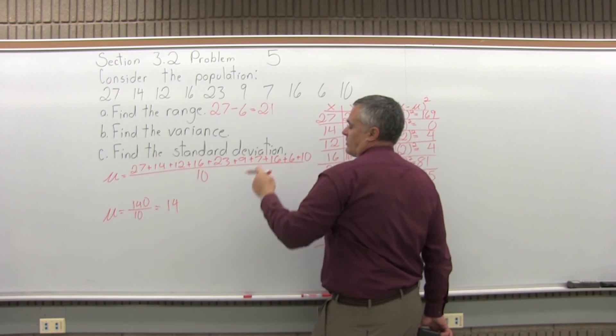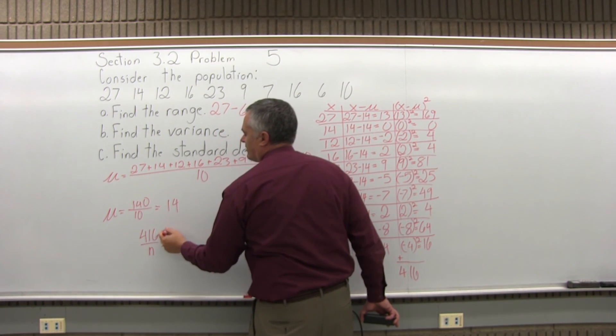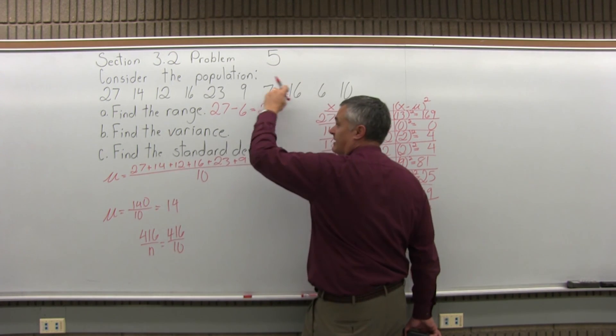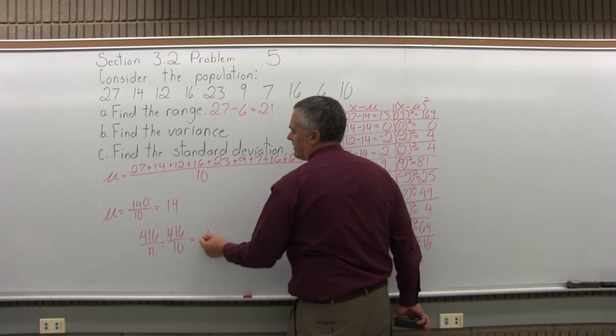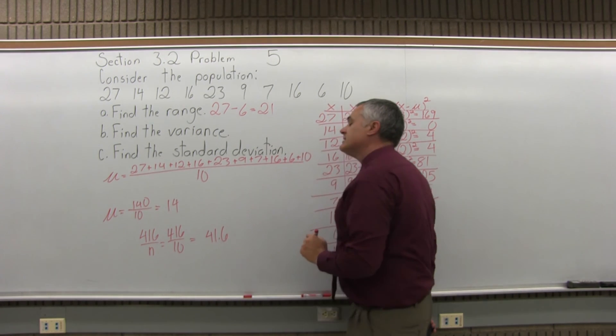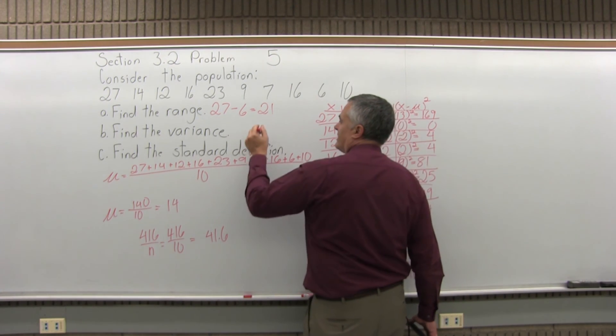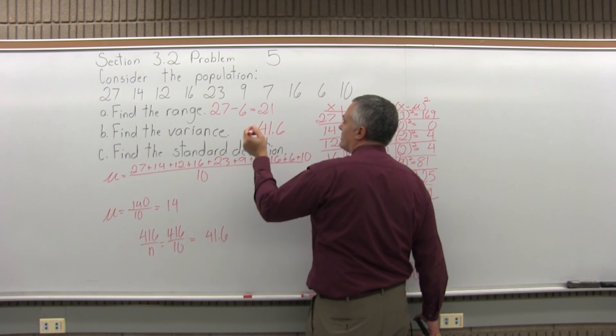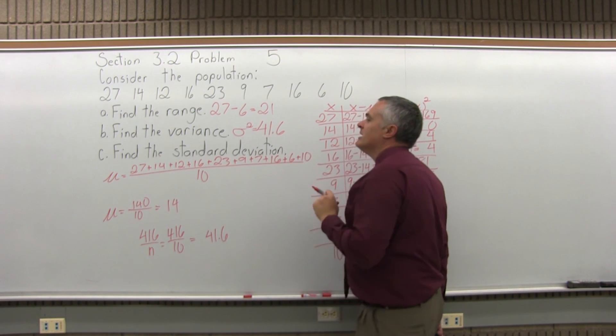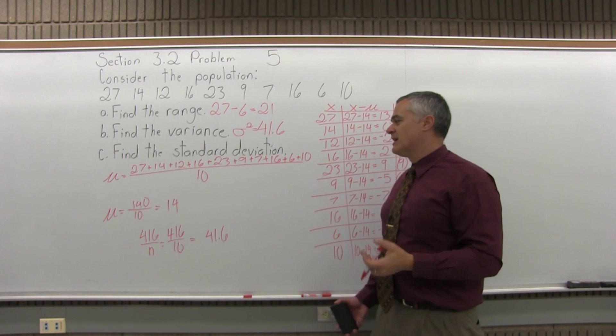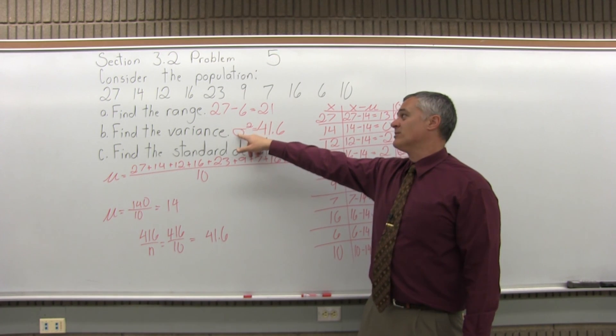So, 416 divided by n is 416 divided by 10, because n is 10. N is how many data values. We have 10 data values, so n is 10. And I can divide this without a calculator. So, 416 divided by 10 is 41.6. Now, that's the variance. The variance is 41.6. If you want to use the proper symbol for it, since it's a population, it's sigma to the second power. Sigma is the S from the Greek alphabet. Usually sample variance is S second power, but for population it's sigma second power.